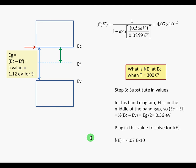For silicon, EC minus EF will equal 0.56 electron volts. Plug this value in to F of E.